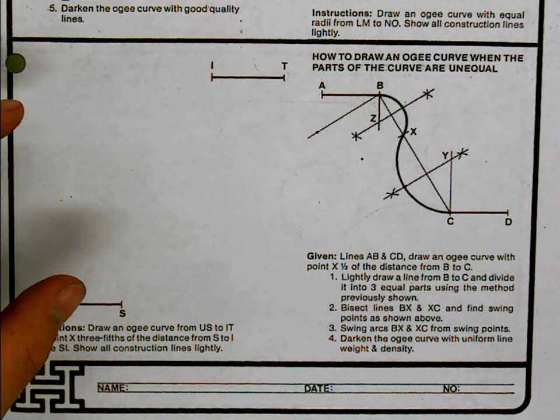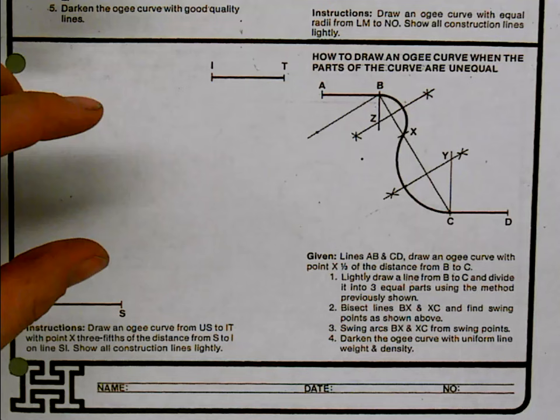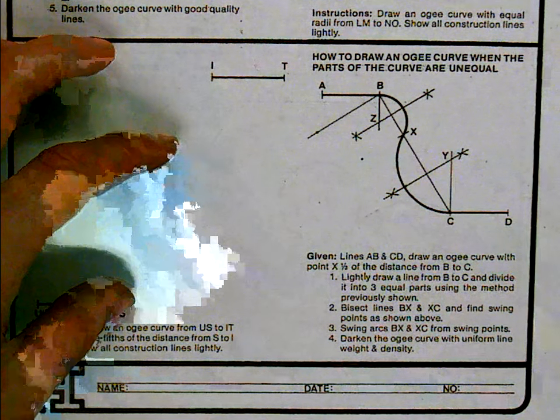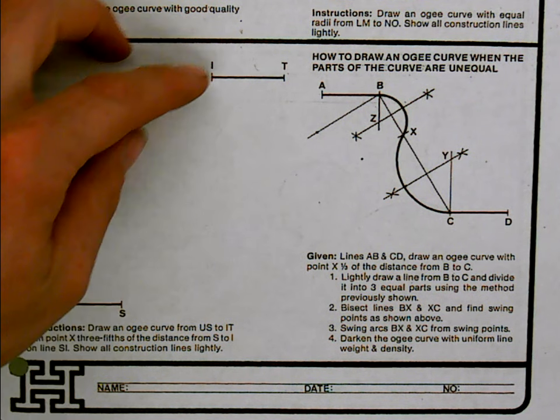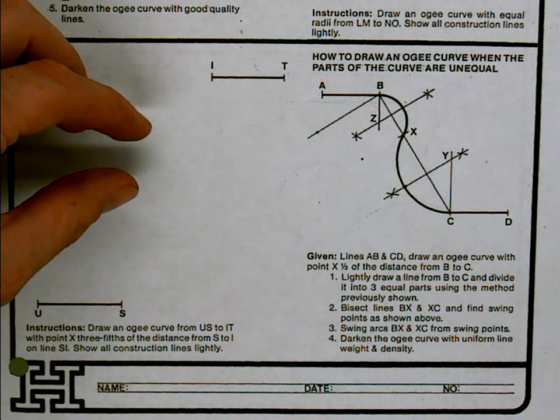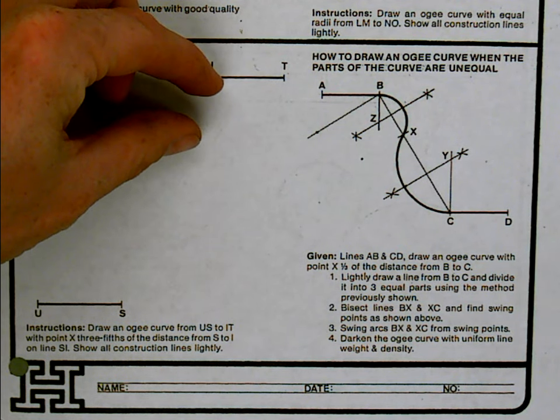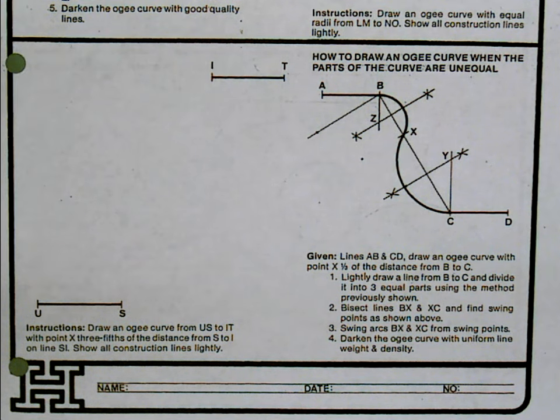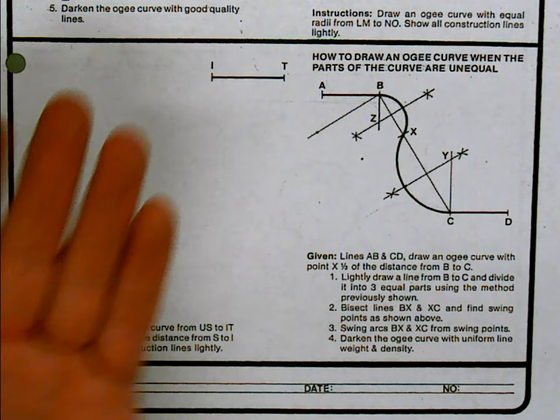And in this case, we're going to have the lower point be 3 fifths of the distance of the straight line, and then the upper portion would be the remaining. So like what you see here, only mirrored.